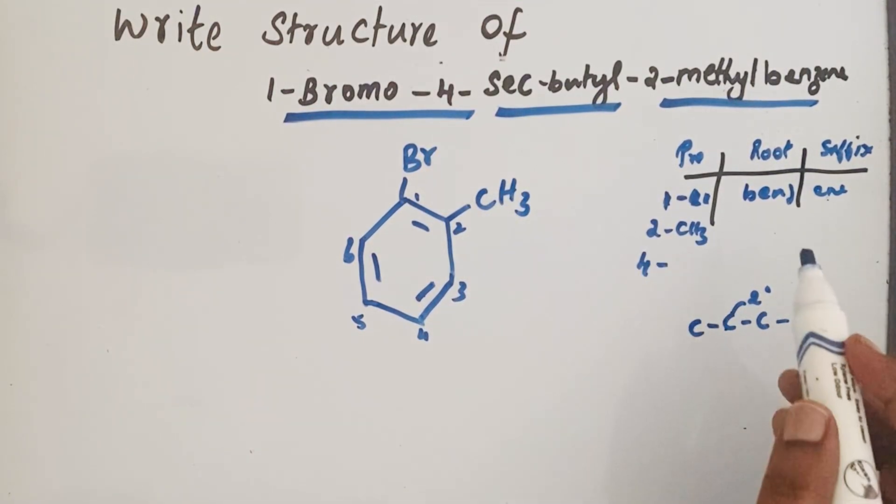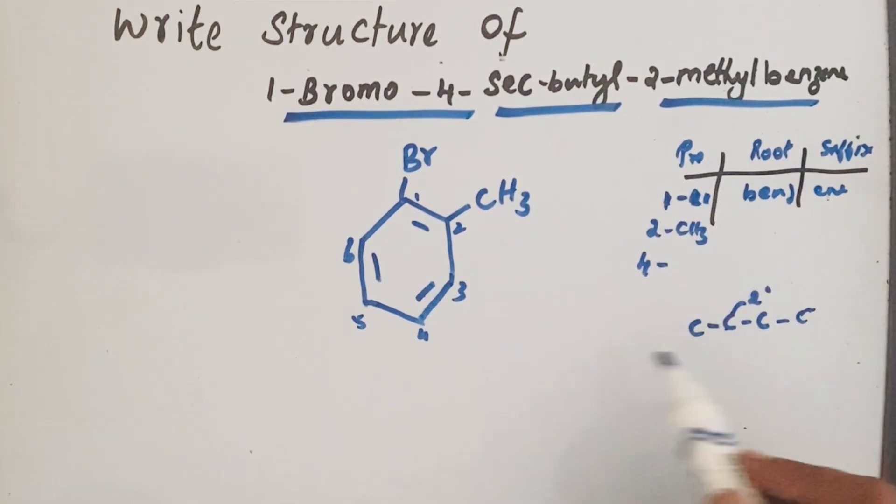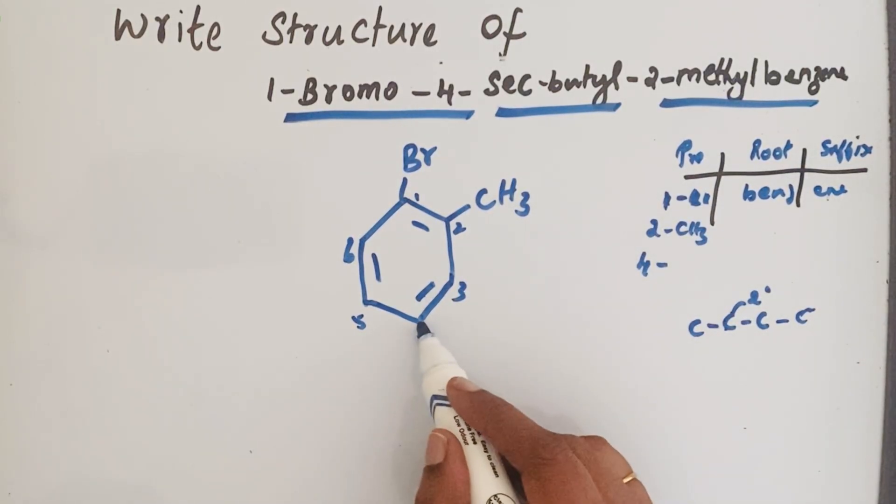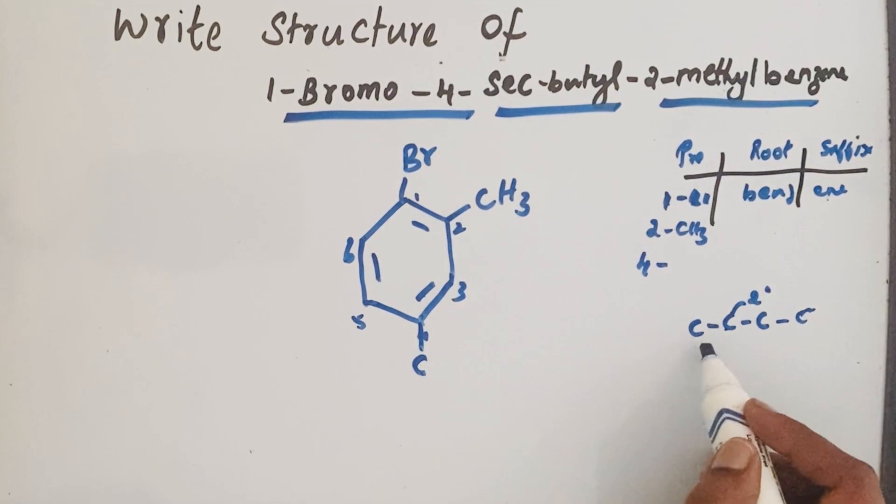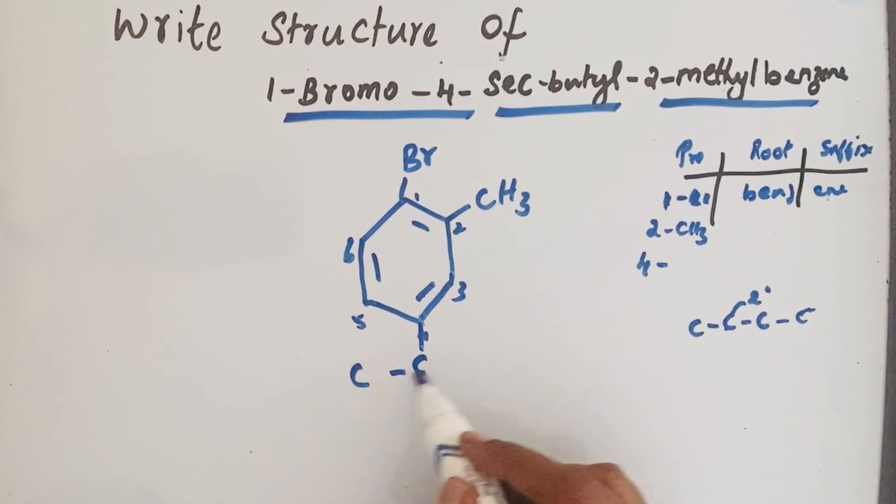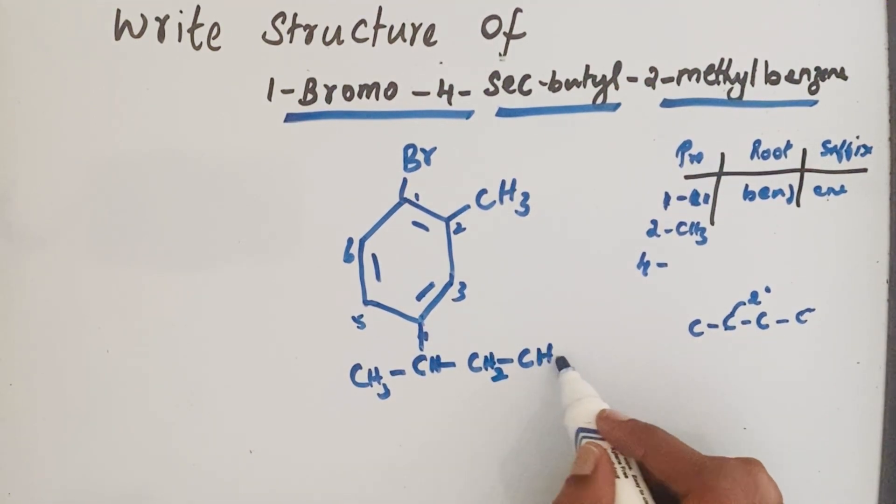So secondary butyl, this carbon must attach here, and here another carbon, C-C. Now we can fill that carbon valence. Here CH3, then this carbon is already attached to benzene ring so only one hydrogen atom, then here CH2, then CH3. So this is the structure of 1-bromo-4-sec-butyl-2-methylbenzene.